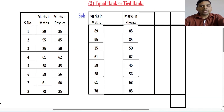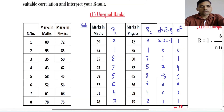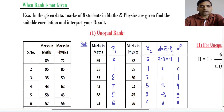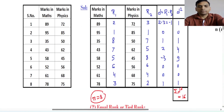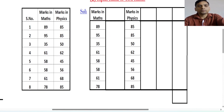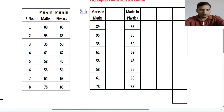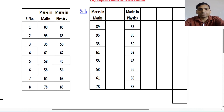We have the same type of question: 8 students are there and their marks in maths and physics are given, and you need to find the correlation between them. We have two columns — first, marks in maths; second, marks in physics. Now we will find the ranks. The first rank column R1 is for maths and R2 is the rank in physics.